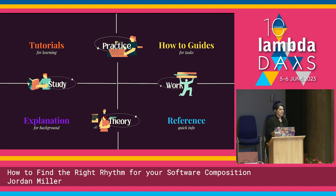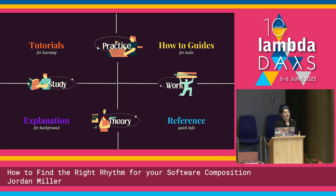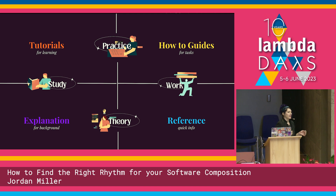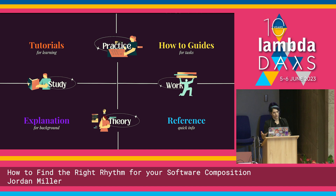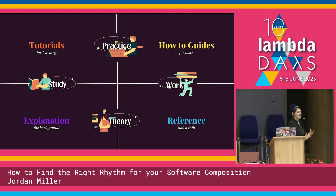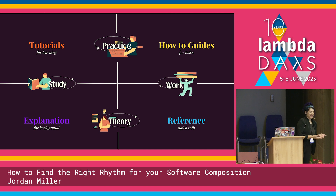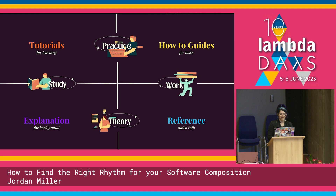Then we move on to reference guides. I can always identify them by a visual pattern — it's usually like a table or a map with pointers, a visual representation instead of text. Reference guides help us get our work done, but the knowledge is theoretical — you don't need to follow it in order. An API chart is a very good example; you just go in, look up an endpoint, and you're done. And then we have explanations — that's for background. I call those the 4am YouTube rabbit holes you fall into, like 'what is the Baroque period?'